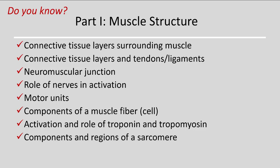What you should know for muscle structure: the connective tissue layers surrounding the muscle and how those layers form tendons; the parts of a neuromuscular junction; the role of a nerve in activating individual muscle cells and what a motor unit means; the parts of a muscle fiber; the role of troponin and tropomyosin in stimulating and blocking contraction; and the important components and regions of a sarcomere.